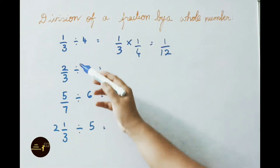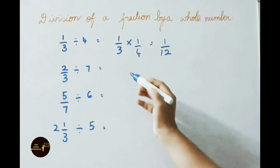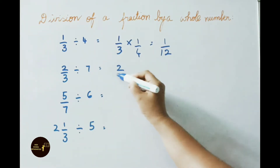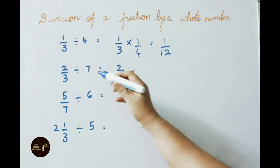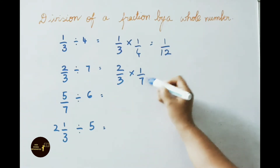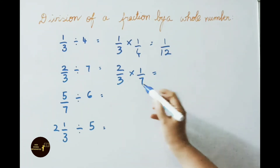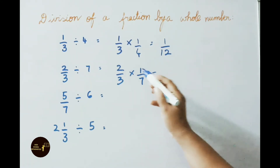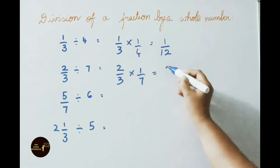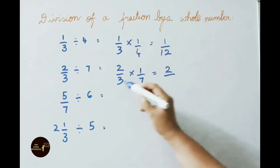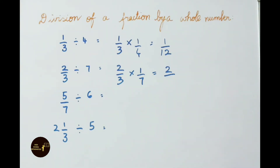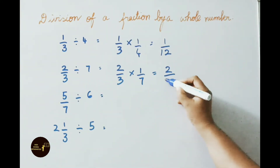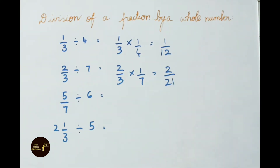See the second one: 2/3 divided by 7. Write down 2/3 × reciprocal of 7, which is 1/7. That equals to numerator: 2 × 1 = 2, denominator: 3 × 7 = 21. So the answer is 2/21.